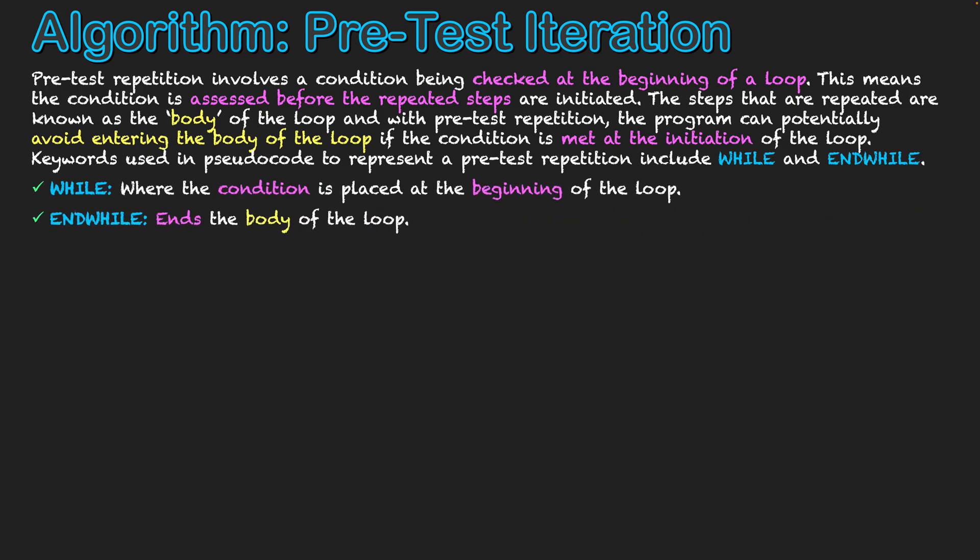WHILE is what we start off our pre-test repetition with, and it is followed by the condition. So what is the actual condition that needs to be satisfied to exit the loop? And obviously it's placed at the beginning of the loop. Then we have the term END WHILE, which is placed after all the repeated steps that exist within our body of the loop and essentially ends the area of the pre-test repetition within our algorithm.